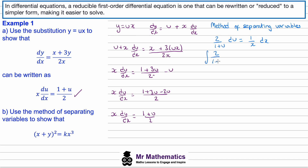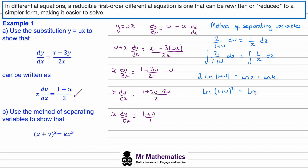Integrating both sides: the integral of 2 over (1 plus u) with respect to u equals the integral of 1/x with respect to x. The left side gives 2 times the natural log of |1 plus u|, and the right side gives the natural log of x plus a constant, which I'll write as the natural log of k. Moving the 2 to a power using the log power rule, we get ln(1+u) squared.